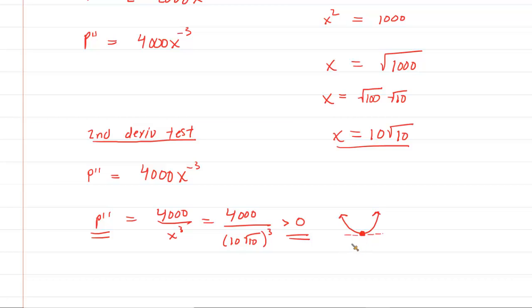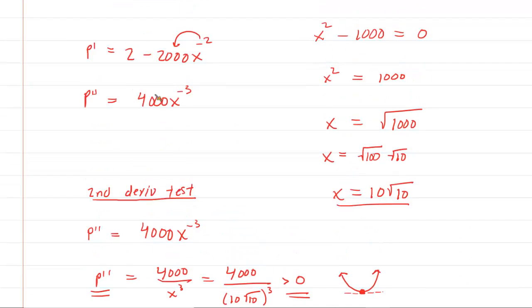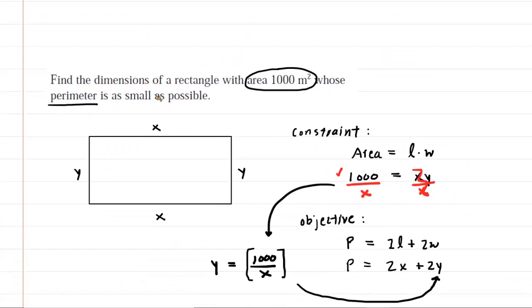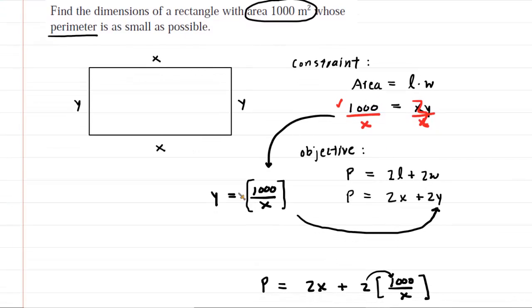So that concludes, according to the second derivative test, that the perimeter is minimized. Your teacher might want you to write according to the second derivative test. Now, let's just make sure we've answered the question, because sometimes they want the dimensions, sometimes they want the actual perimeter. They do want the dimensions. So we have x, we already know that's 10√10. That would be in meters.